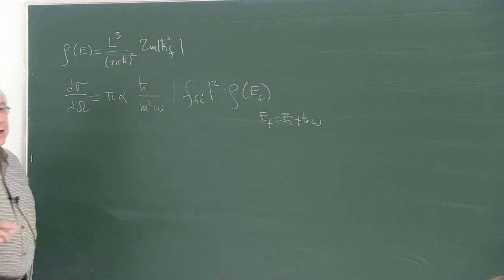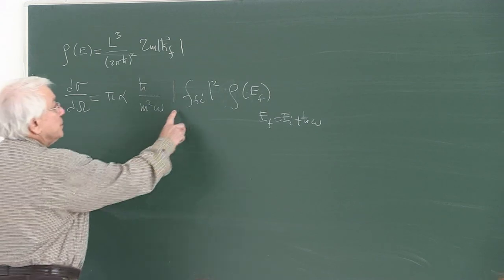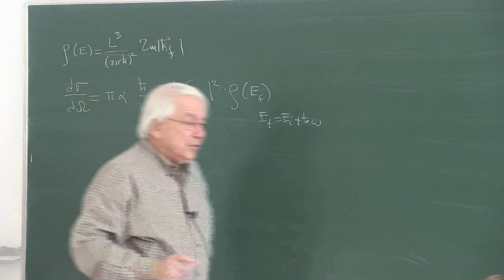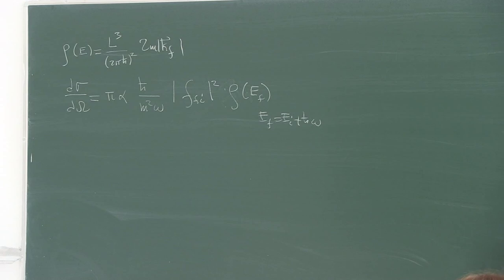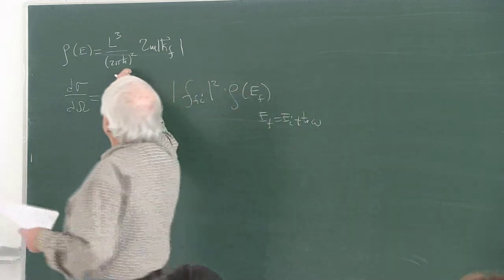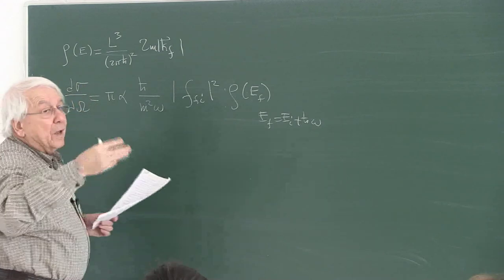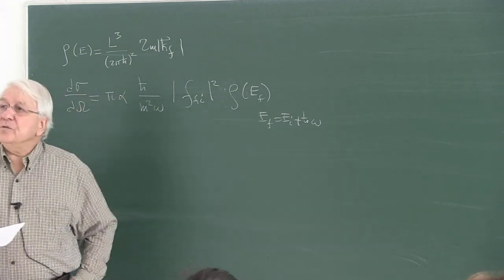It is customary to write the expression in this fashion. Here is the matrix element, which essentially carries all the dynamics in the system. Rho is the density of final states, which we computed last time based on the box renormalization prescription.